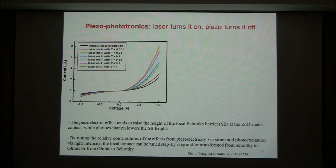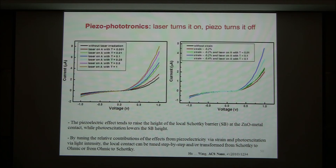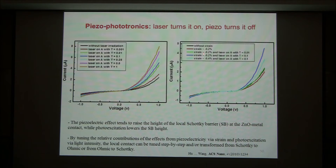We can utilize laser to counteract the piezo effect. We can use laser to lower the barrier and piezo to raise the barrier. Laser can always lower the barrier — it cannot raise the barrier. So if you tune correctly with the right strain, the piezoelectric effect raises the barrier height equal to what the laser lowers, and the two cancel each other. The green curve at 0.2 percent compressive strain and laser intensity of 0.01 — one cancels the other. This is the origin of the piezo-phototronic effect.